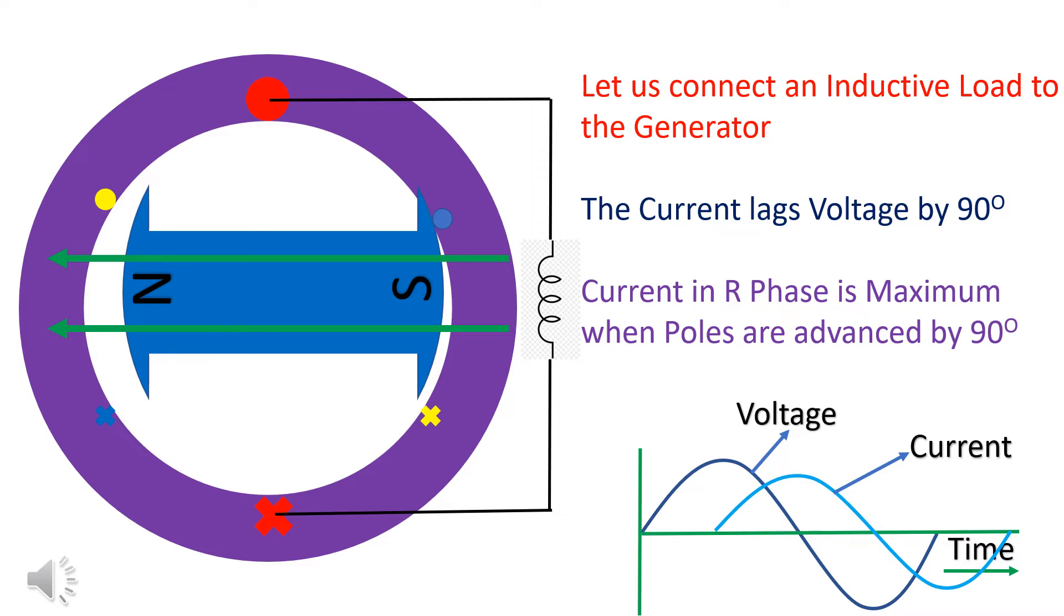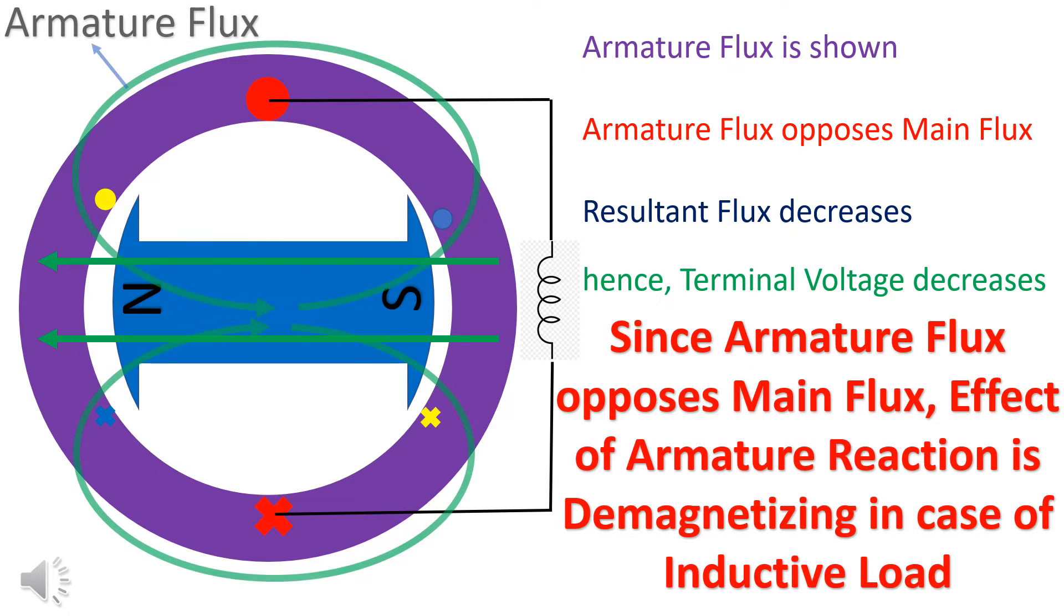Let us see the effect of connecting an inductive load to the generator. Since current lags voltage by 90 degrees, poles are required to be advanced by 90 degrees to get maximum current in the R phase. Armature flux opposes the main flux. Hence, effect of armature reaction is demagnetizing in case of inductive load.